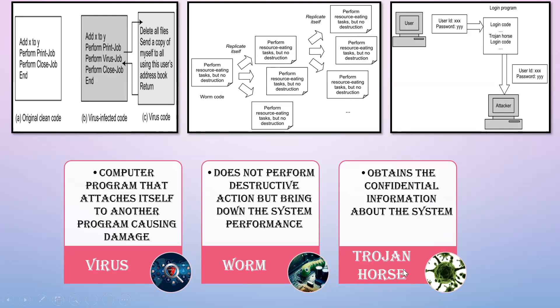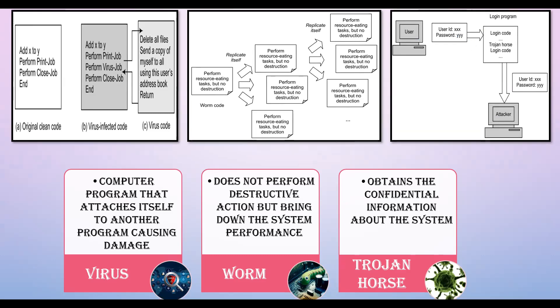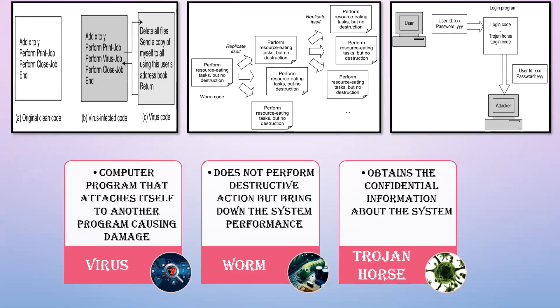Next is Trojan horse. A Trojan horse does not attach to any file and does not visibly do anything. Its final action is to steal all confidential information. For example, a user uses a user ID and password to log in to a website — that user ID and password will be completely stolen. It finds the confidential data, takes it, and destroys it.